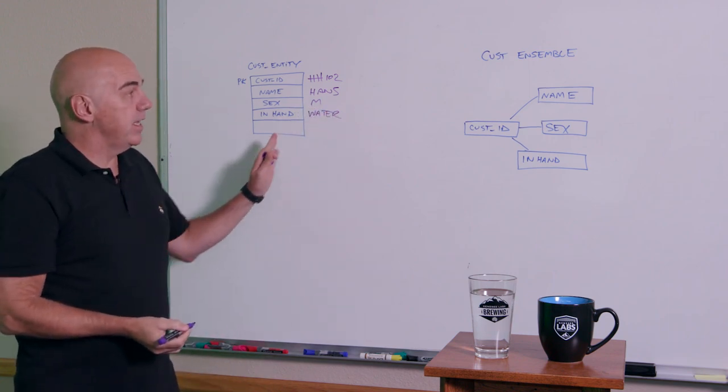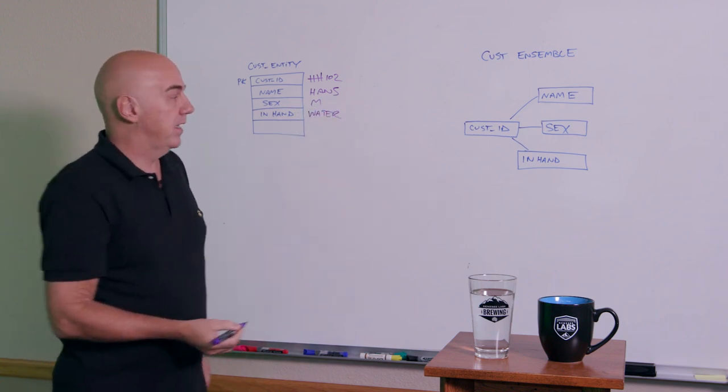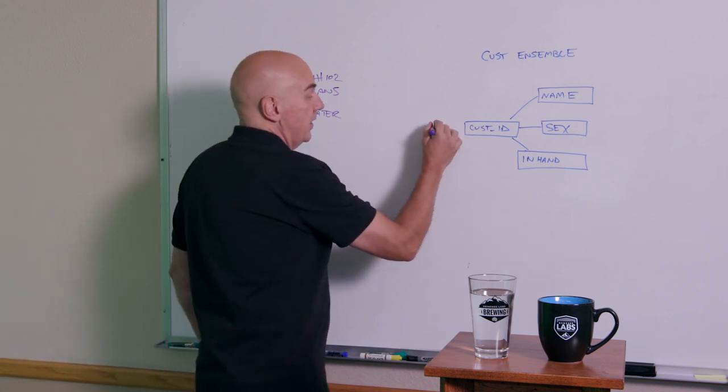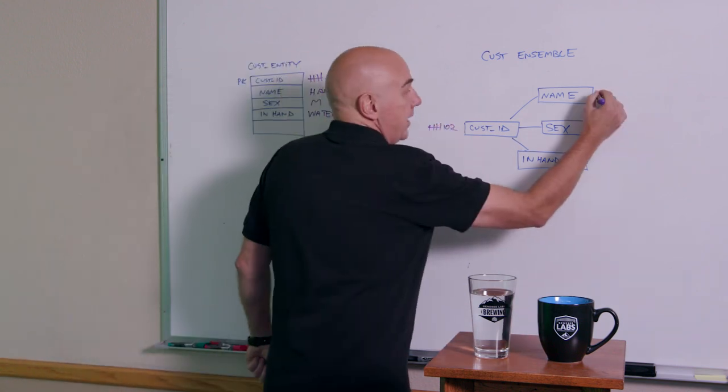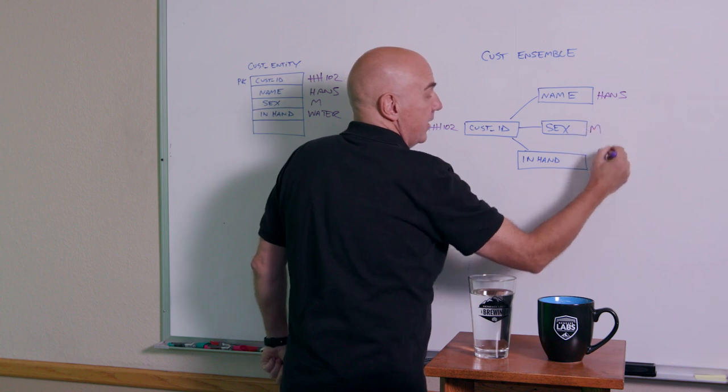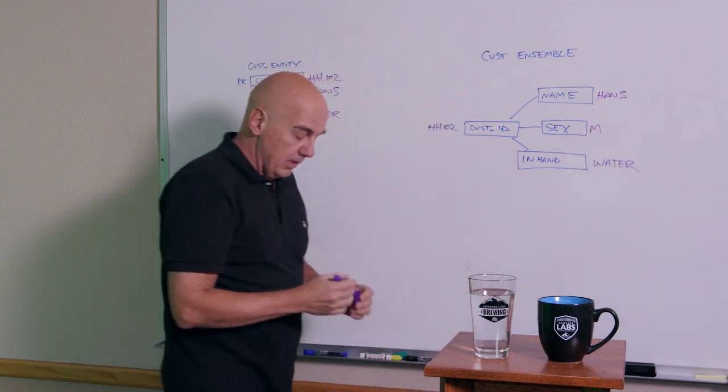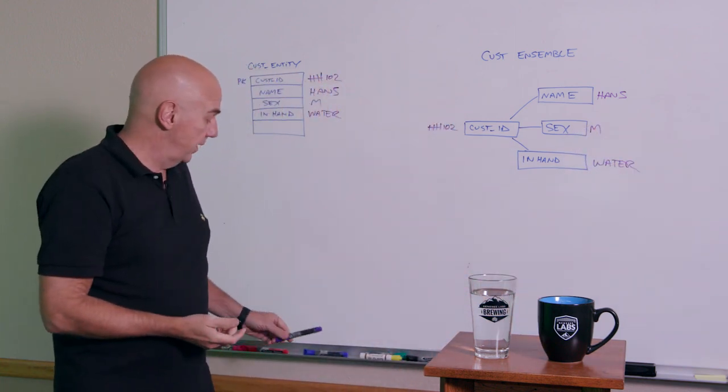If I was using an ensemble method to do the same exact thing, I would say there's HH102, my name is Hans, sex male, and I've got water in my hand. Makes sense, makes good sense.